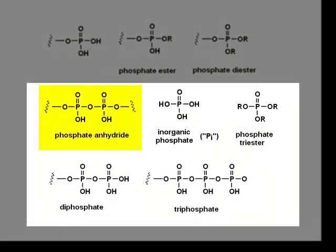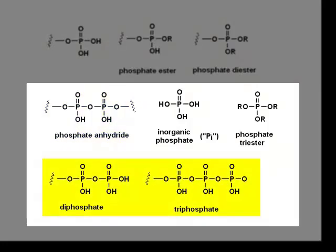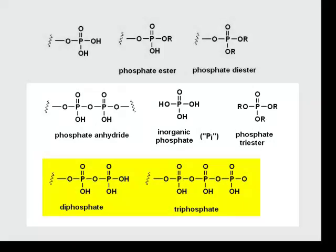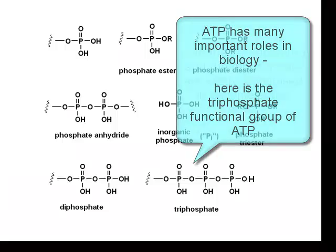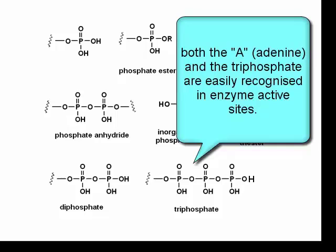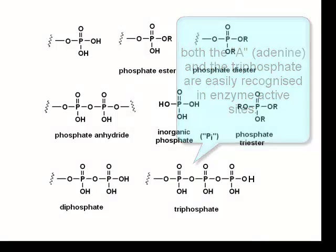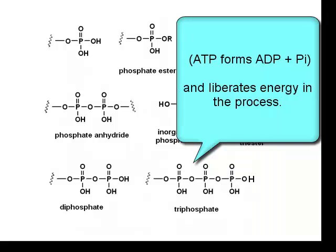We can join two phosphoric acids together to make an anhydride structure, or add a phosphate to another phosphate to make a diphosphate or a triphosphate. Who's heard of ATP? Lots of people have — it's a triphosphate. In those types of structures you have powerful recognition motifs and powerful leaving group motifs, which have a crucial role in energy storage and reactivity in biological systems.